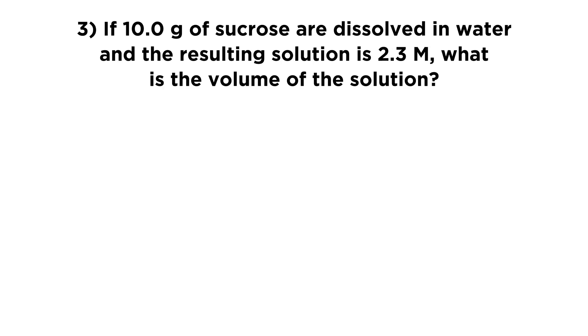Okay, let's look at the last one. So we have 10 grams of sucrose, and we dissolve that in water, and the resulting solution is 2.3 molar. So we want to know what the volume of the solution is. So once again, if we have mass, we're going to need moles. So let's just go ahead and convert that right off the bat. 10 grams times 1 mole over 342.3 grams. That means we have 0.0292 moles of sucrose.